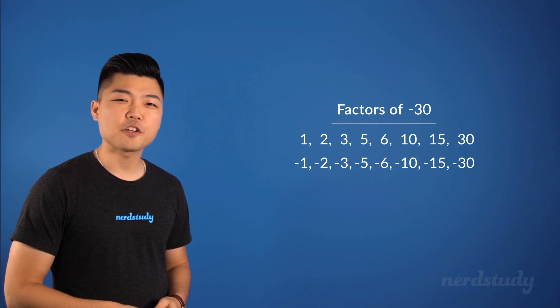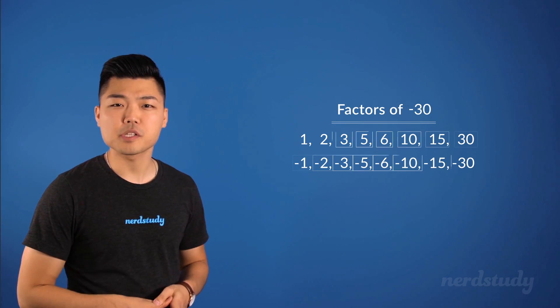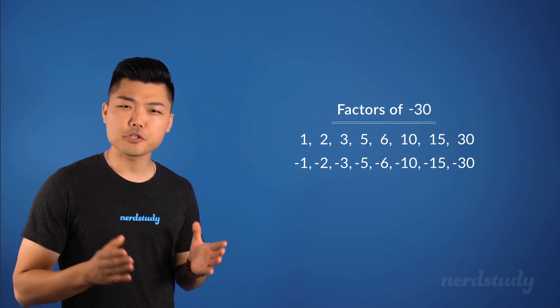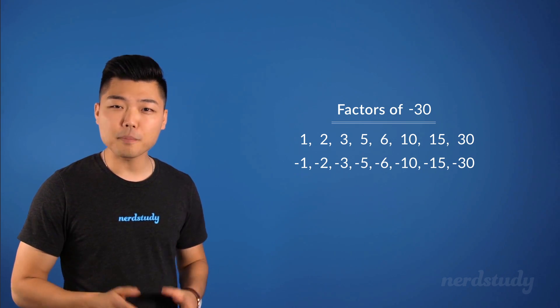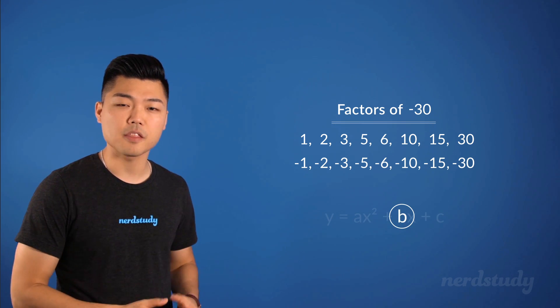Before we move on to finish this, a lesson is to be learned. You already have the pairs of numbers that would multiply to become negative 30. So, what you should do is worry strictly about how they would add together to become the B that we're looking for.